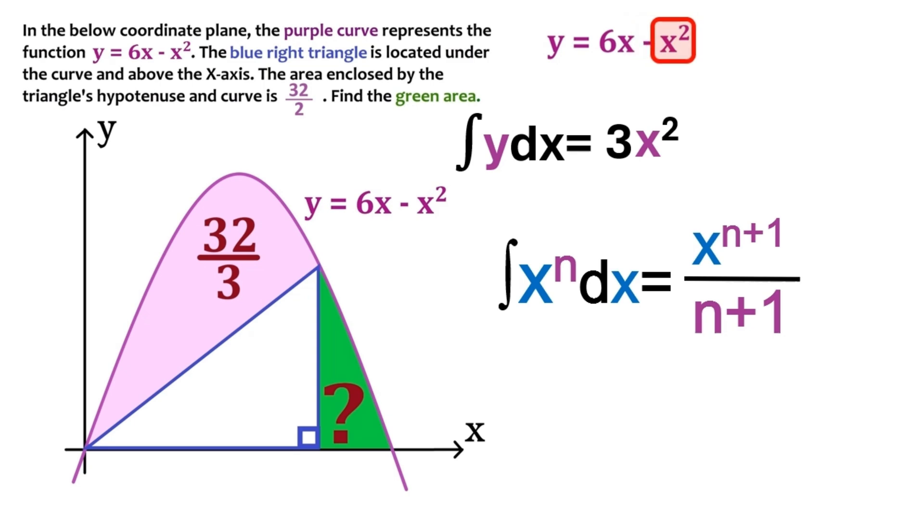This is x to the power of 2. So it becomes x to the power of 3. We divide it by 3. And we put this minus sign here, because it is there in the original function. Here, our integral is ready.